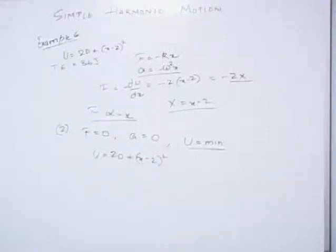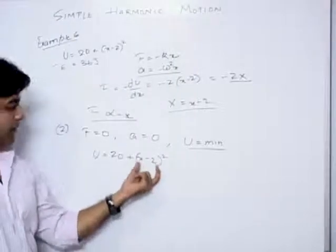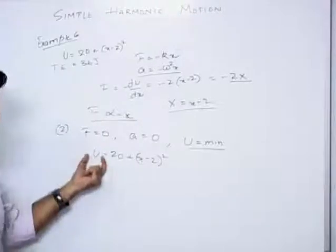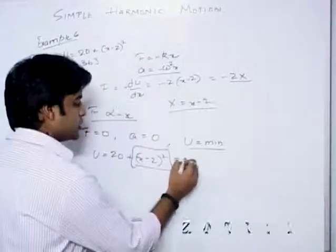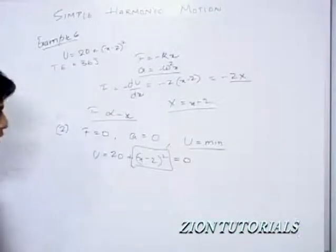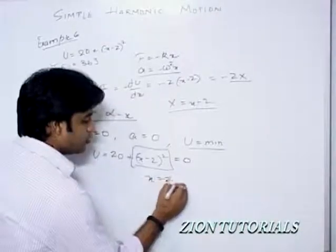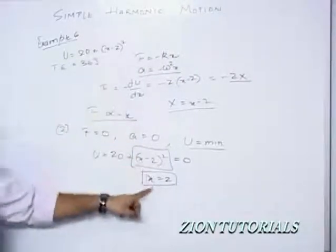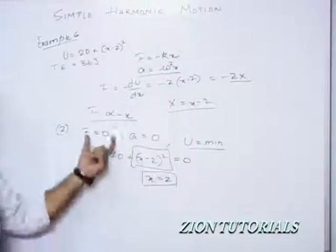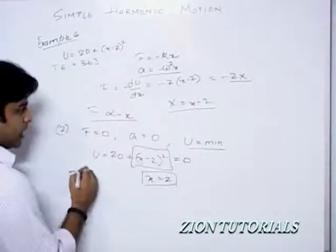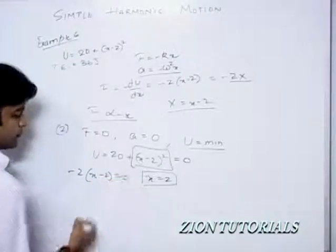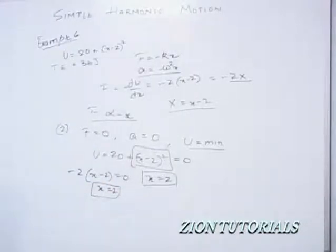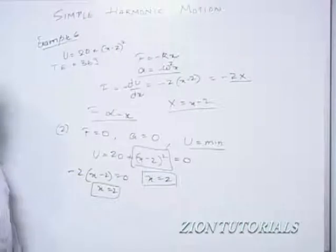The minimum value of the potential energy occurs when (x minus 2) equals zero, because the squared term is always positive and its minimum is zero. So x equals 2 is the mean position. Confirming with F equal to zero: minus 2 into (x minus 2) equals zero gives x equals 2, where force and acceleration are both zero.